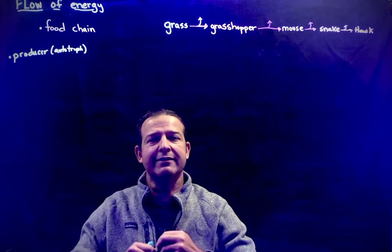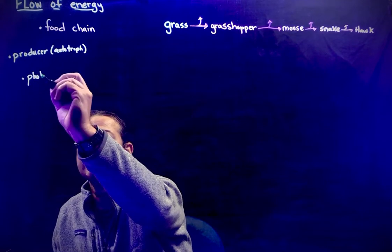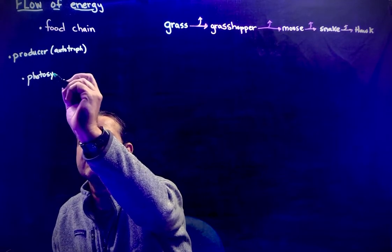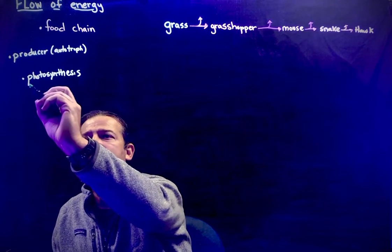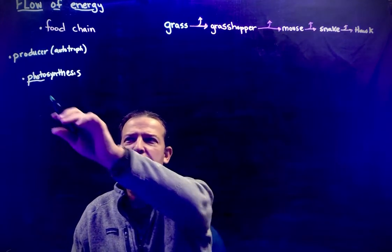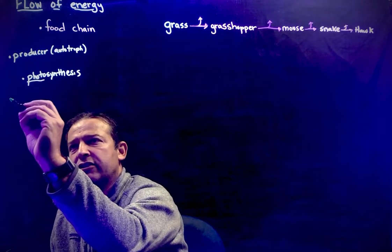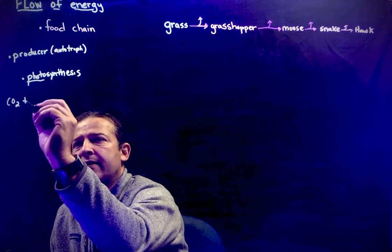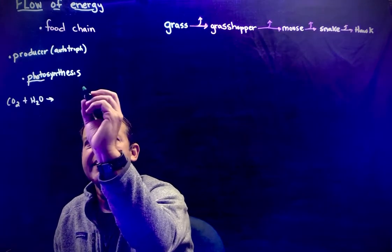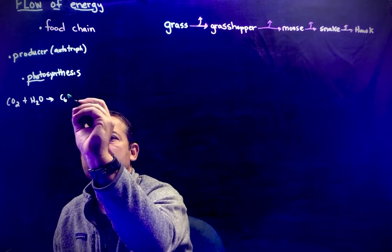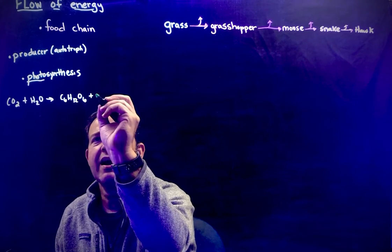So the two processes they're going to carry out are either photosynthesis — photo meaning light, so you're using light to make something — and basically in photosynthesis you're going to take carbon dioxide and water and convert that into sugars and oxygen.